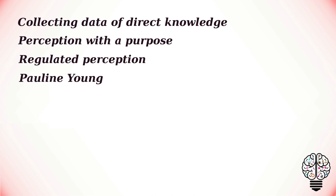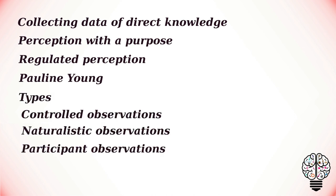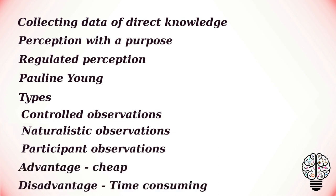Observation is generally watching what people do. Some of the major types of observation are controlled observations, naturalistic observations, and participant observations. The main advantage of this method of research is that it is cheap to carry out; however, it can be very time consuming.